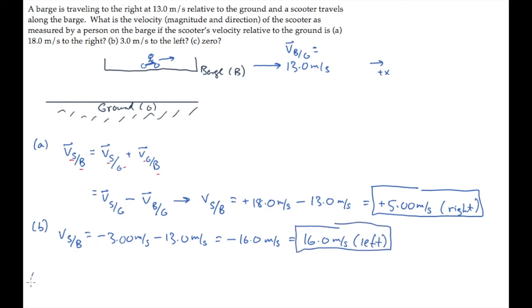In part C, the scooter is at rest relative to the ground. So we calculate that the velocity of the scooter relative to the barge is minus 13 meters per second — it must be going 13 meters per second to the left.